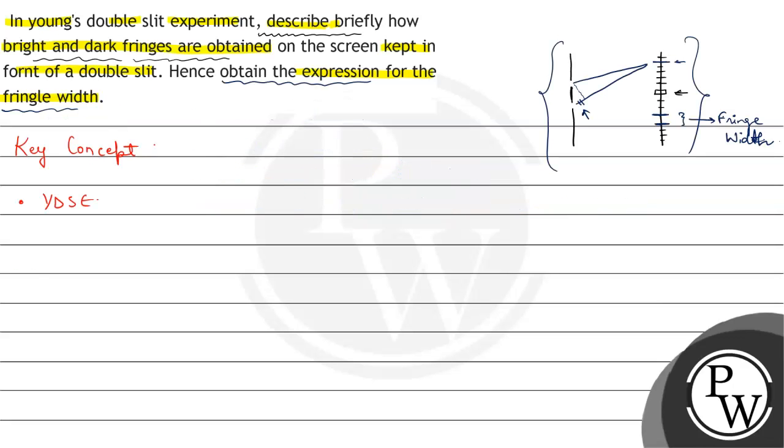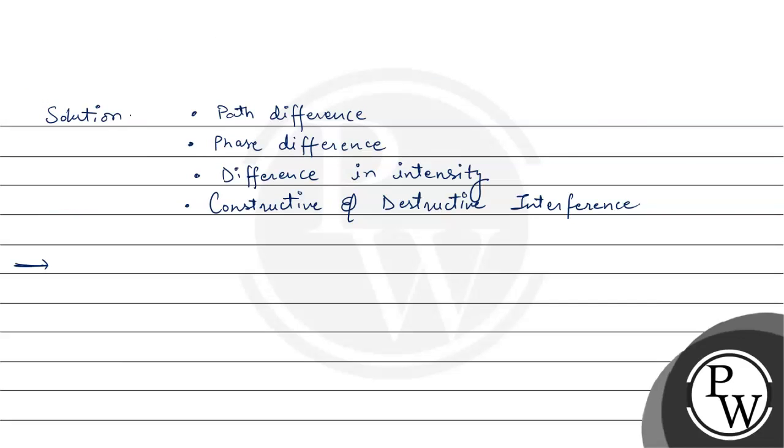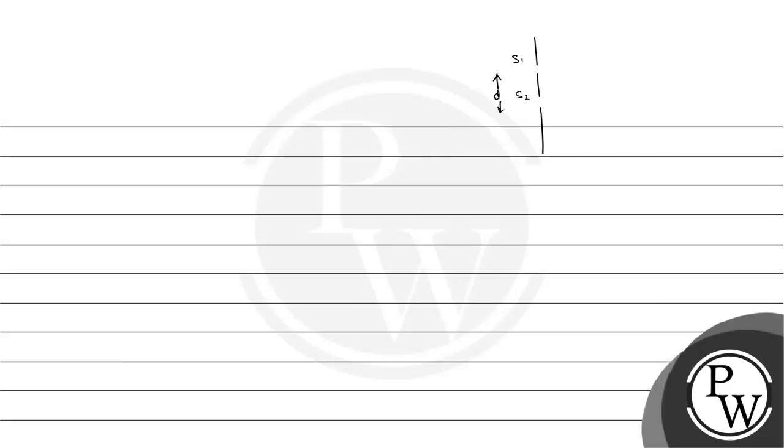Let us make a well-labeled diagram. We have two slits — slit 1 as S1 and slit 2 as S2 — with their separation as small d. We place a screen in front at distance capital D. There is a central bright fringe, and we check for a point P at distance Y from the central bright fringe.